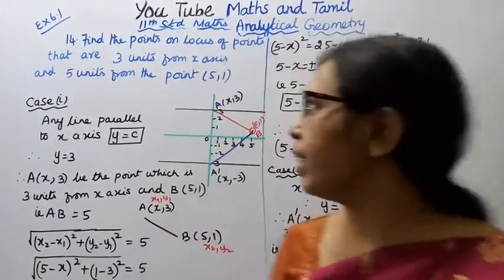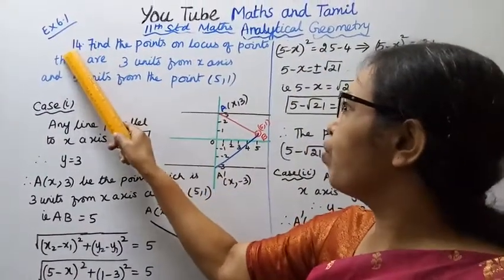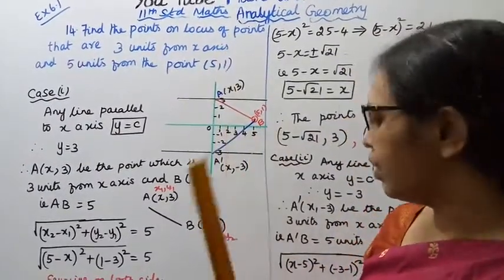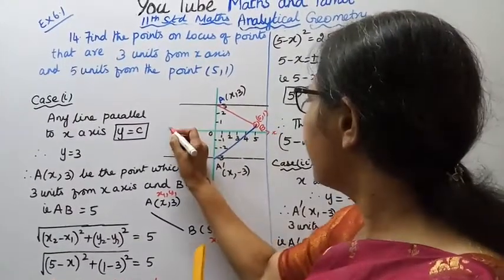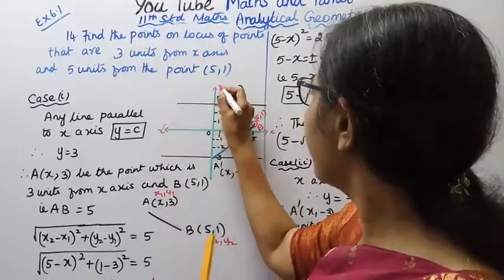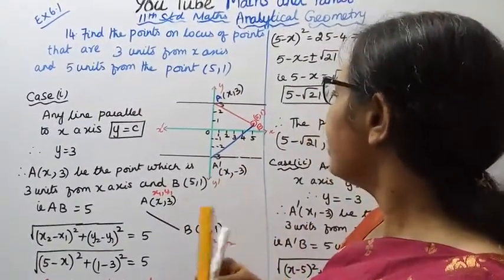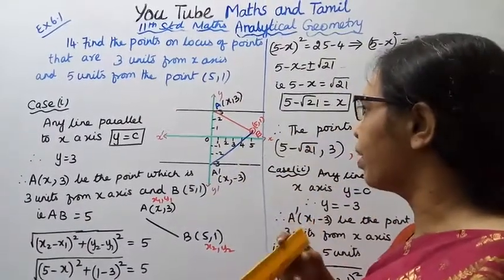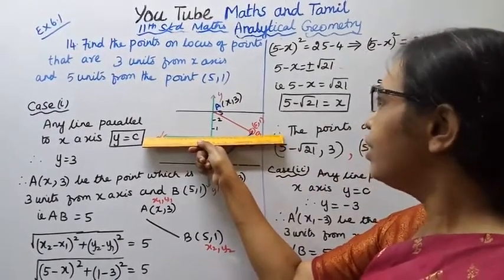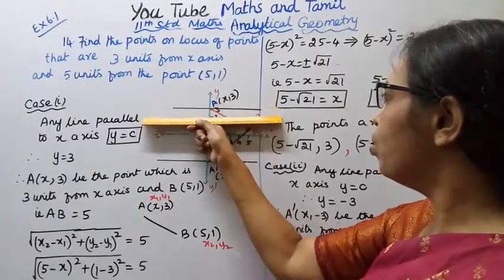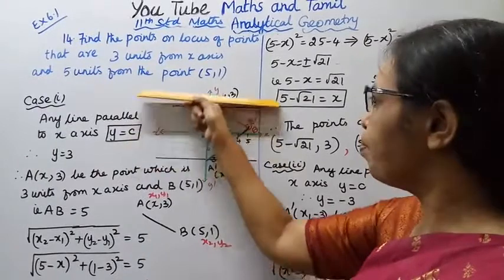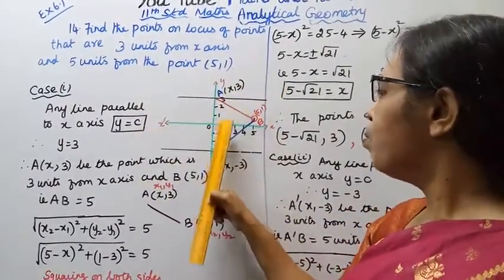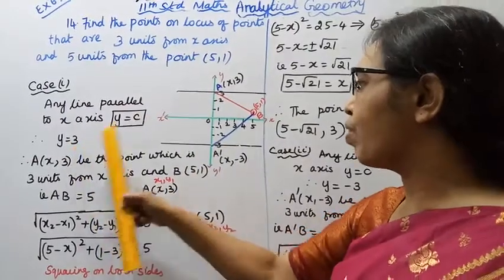Hello students, welcome to Max and Tumble channel. This is Stella Max Analytical Geometry, problem 6.1.14. Find the points on the locus of points that are three units from the x-axis and five units from the point (5,1). Moving three units from the x-axis, any line parallel to the x-axis gives y = c, and therefore y = 3.